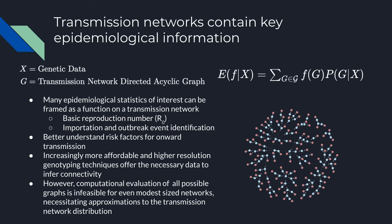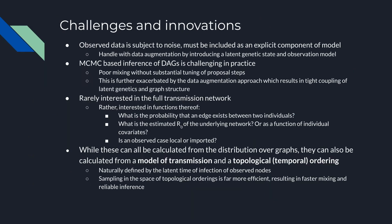We present here a Bayesian model to estimate the posterior distribution of transmission networks given the data by MCMC. This involves several challenges. First, as no experimental assay is perfect, the observed data is subject to error. We address this with a data augmentation approach by introducing a true latent genetic state, though this then results in difficulties with efficient sampling.